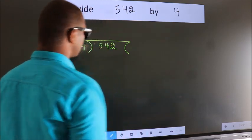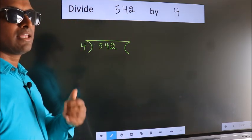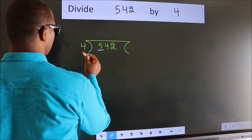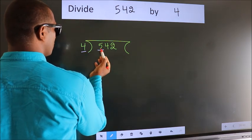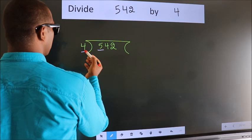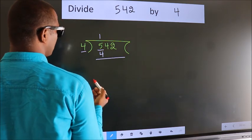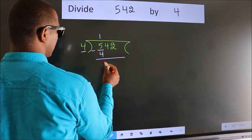This is your step 1. Next, here we have 5, here 4. A number close to 5 in the 4 table is 4 once, 4. Now we should subtract. We get 1.